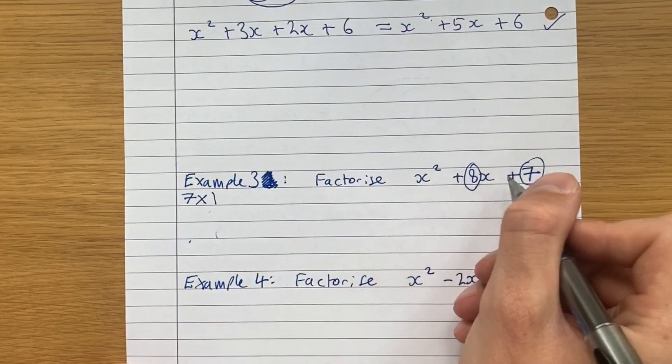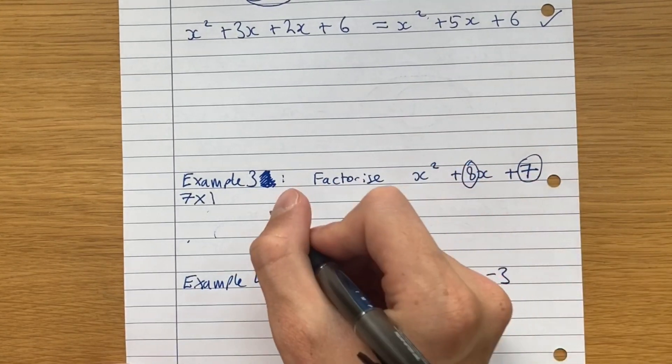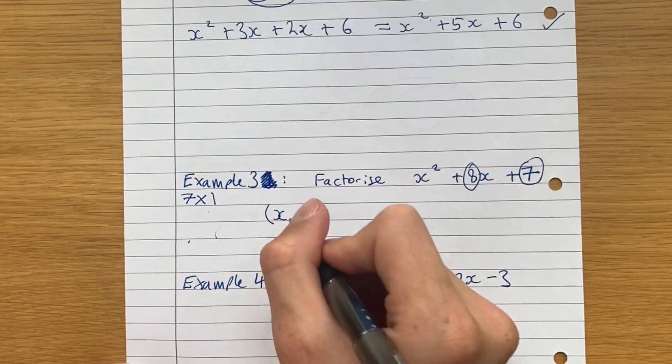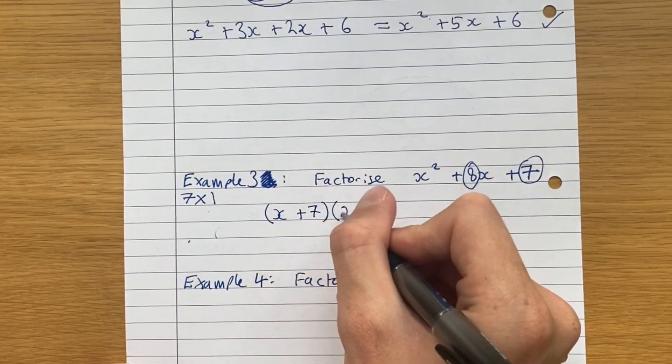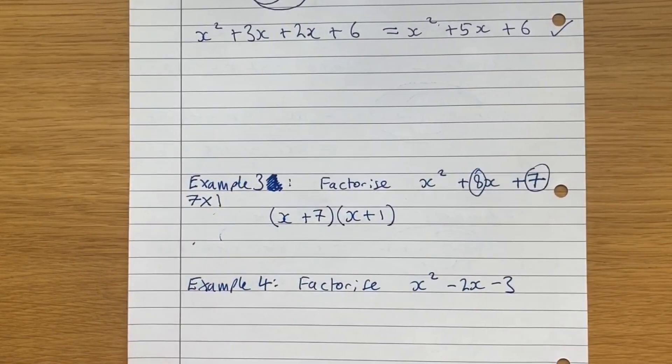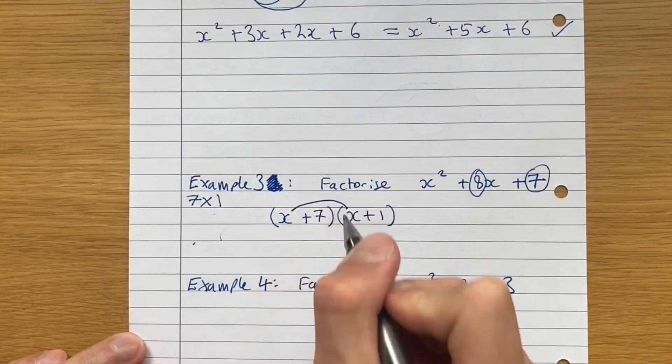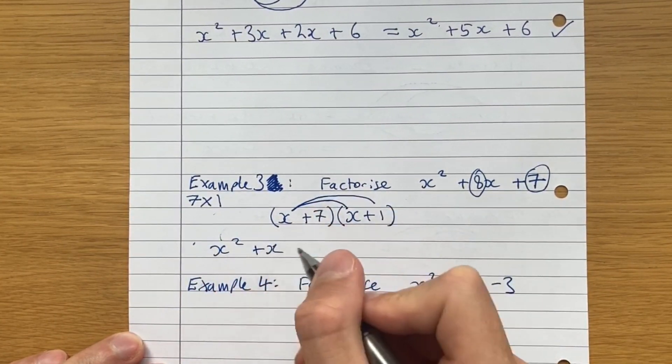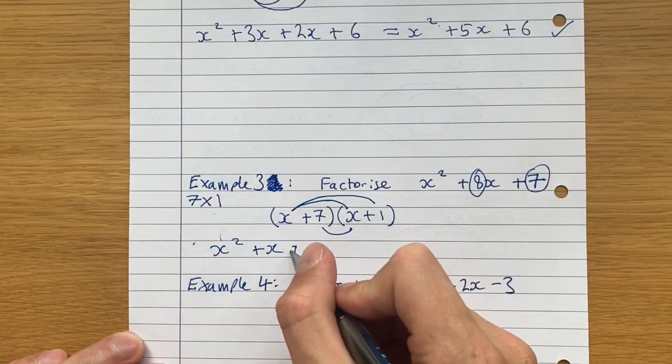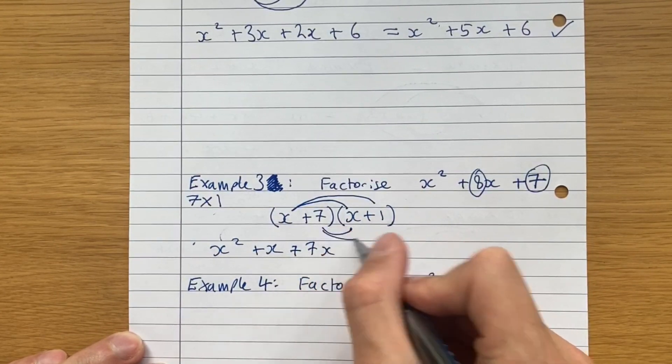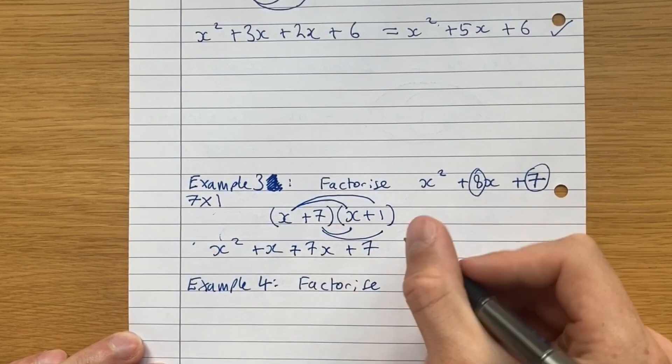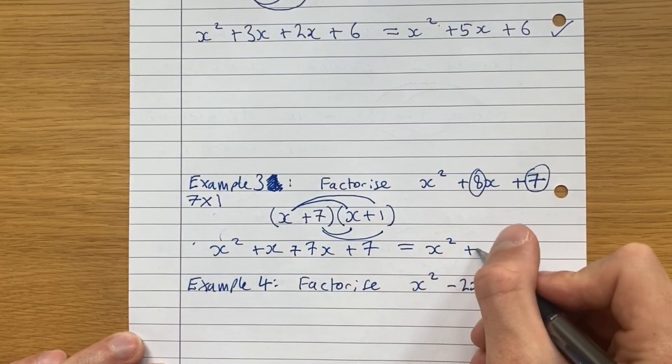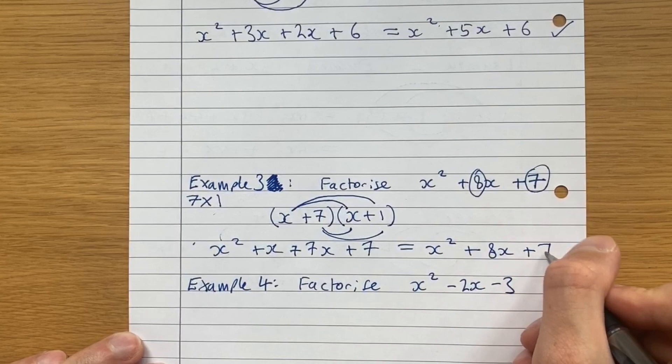we get x plus 7 times x plus 1. And we can check our answer here again. x times x is x squared. x times 1 is x. 7 times x is 7x. 7 times 1 is 7. And this is equal to x squared plus 8x plus 7.